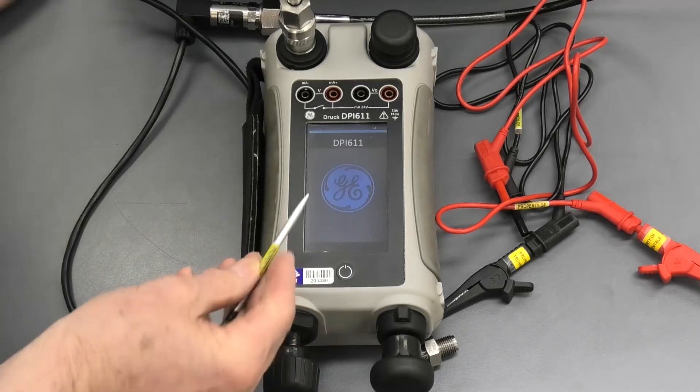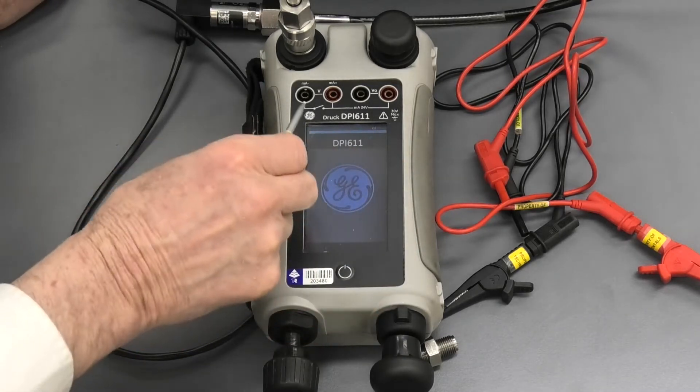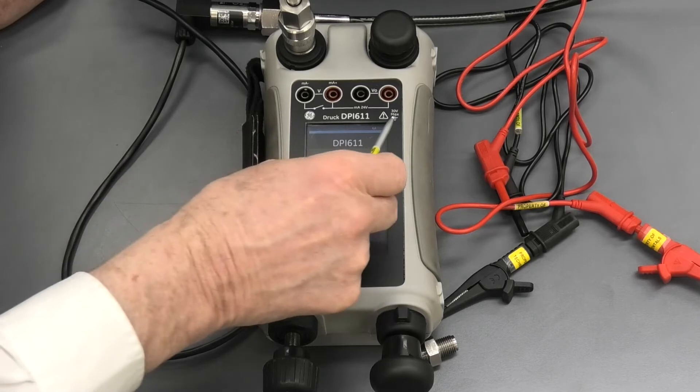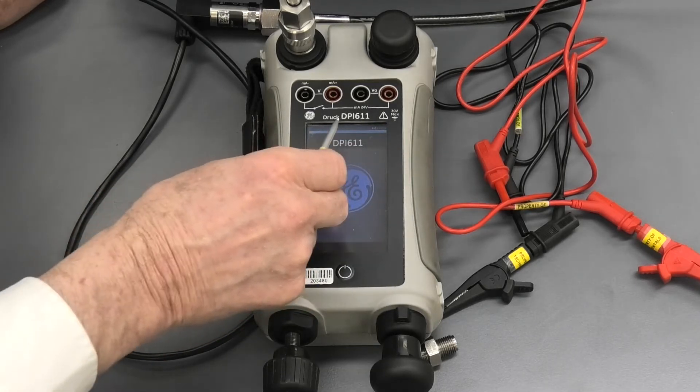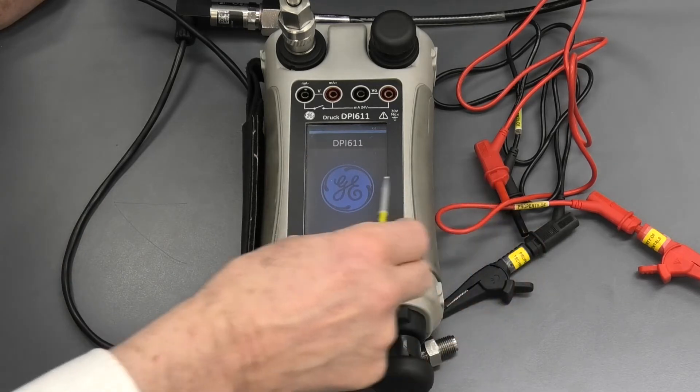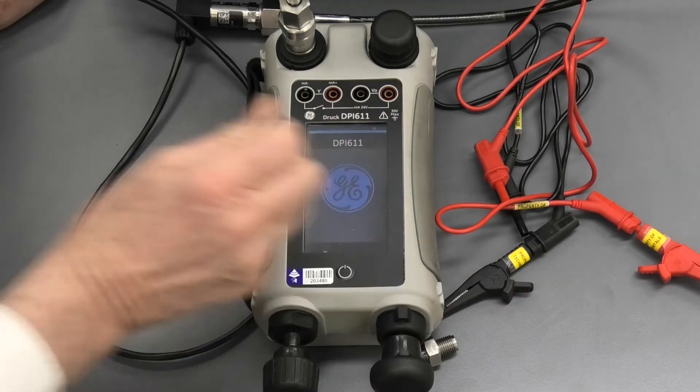Now, a couple of things about the interface. There's this blue line across the top. That indicates how much of the display you're able to see. So if you only see half a blue line, that indicates that there is more display on this side and you have to swipe to see it.